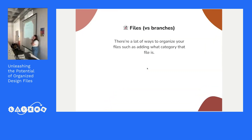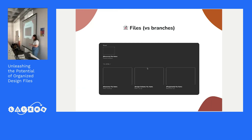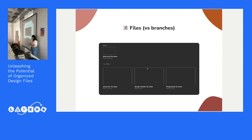The next thing is files. Branches are a recent Figma feature and great, but not all companies have the budget for them. So file naming is valuable. What we can do is signal to anyone entering the space what each file is for — using brackets like '[playground]', '[design system]', or '[resource]'. This tells a product manager, client, or anyone else that this space is for exploration. If you see anything in the playground, it's probably not ready — work in progress — which can avoid hundreds of comments on unfinished work.